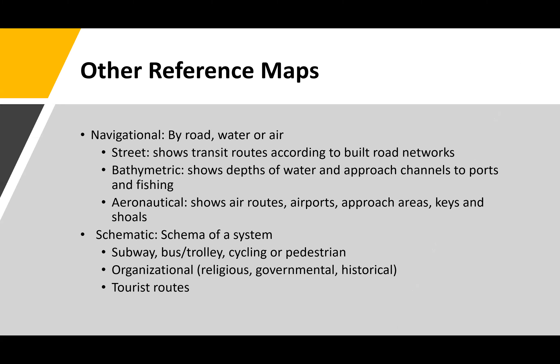Other types of reference maps include navigational and schematic. Navigational maps typically address how to get from point A to point B by road, water, or air. Street navigation shows transit routes according to built road networks. Bathymetric maps show depths of water and approaches to channels, ports, and fishing areas — giving a sense of how deep an area is compared to surrounding land, particularly for oceans, rivers, and lakes.